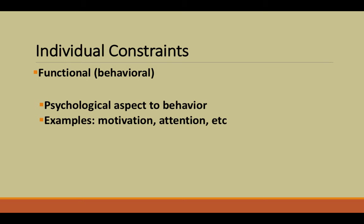Alongside structural constraints, there are also functional constraints, which can be seen as behavioral — these are psychological aspects of behavior. Examples include motivation, attention, and desire to perform the task, and can be thought of as mental constraints. To summarize individual constraints: structural refers to body size and structure, while functional refers to the mental and psychological desire to move.